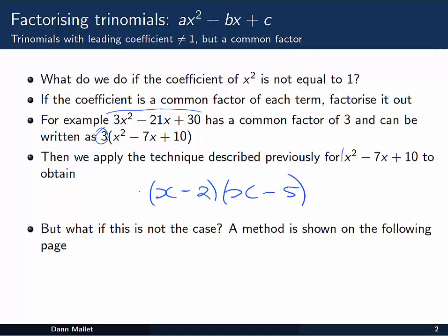Remembering that we have the common factor of 3, we simply place that out the front. So 3x² - 21x + 30 equals 3(x - 2)(x - 5).